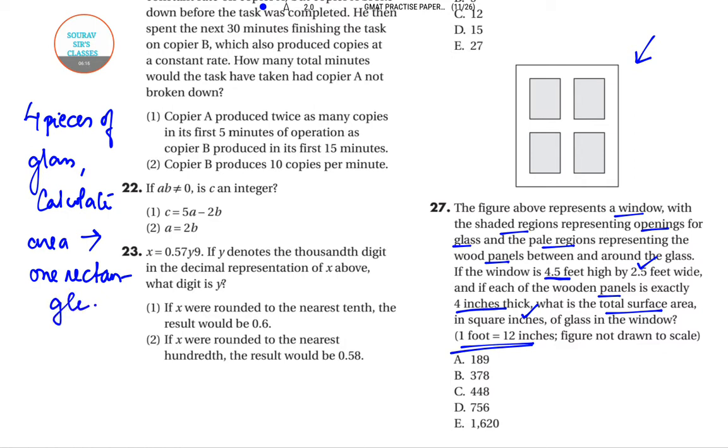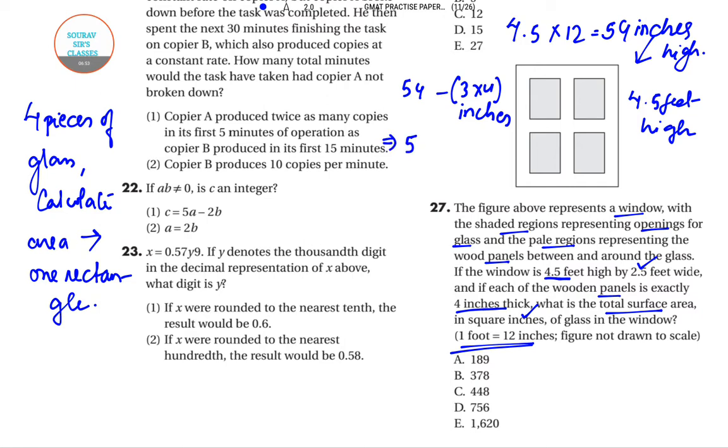So if the window is 4.5 feet high, then it is 4.5 times 12, which is 54 inches high. Now 54 inches minus 3 times 4 inches - this represents the dimension for wooden panels - which means that the glass in the window is 54 minus 12, which is 42 inches high.